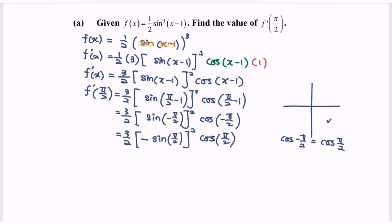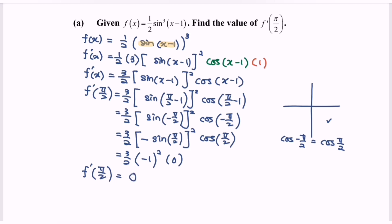Next, simplify. As we all know, sine(pi over 2) equals 1. So we will have 3 over 2 times (negative 1) to the power of 2. As for cos(pi over 2), we obtain 0. So finally, f'(pi over 2) is equal to 0.